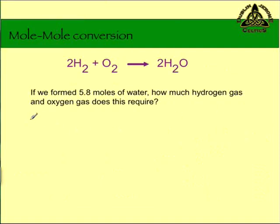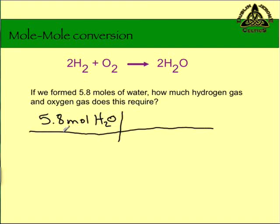Here is an example problem. If we formed 5.8 moles of water, how much hydrogen gas and how much oxygen gas did this require? We are going to set up a dimensional analysis problem starting with 5.8 moles of H2O, and we're just gonna set up one of those T tables. On the bottom we're gonna have moles of H2O.